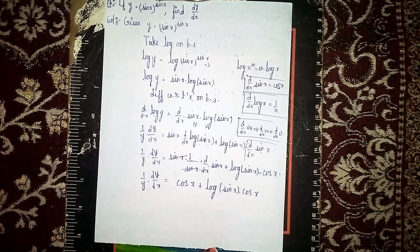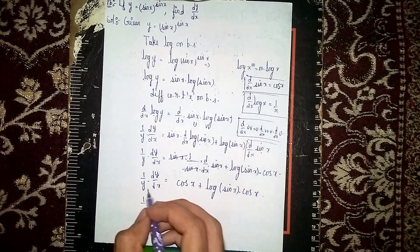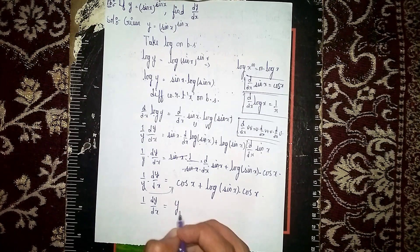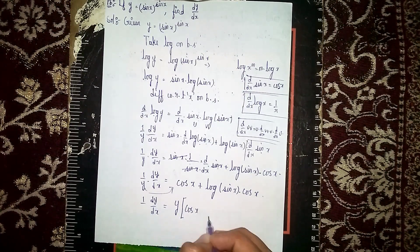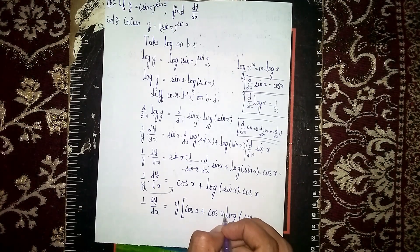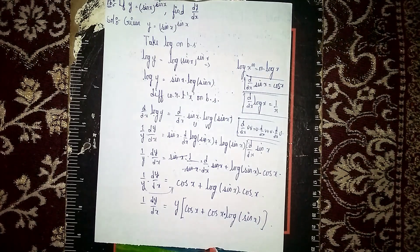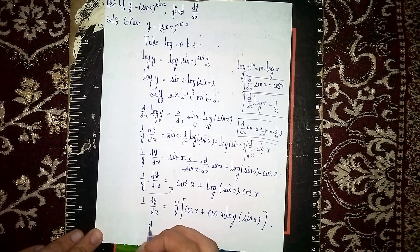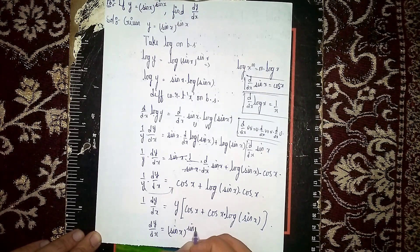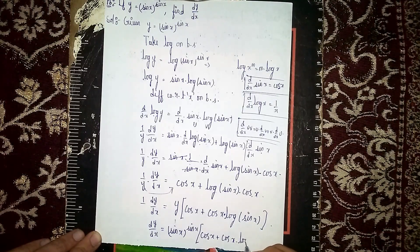Now multiply both sides by y. So dy/dx = y·(cos x + cos x·log(sin x)). Since y = sin(x)^sin(x), our final answer is: dy/dx = sin(x)^sin(x) · (cos x + cos x·log(sin x)). This is our solution. Thanks for watching.